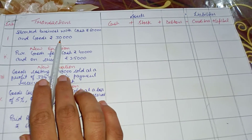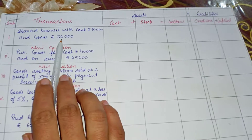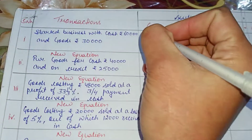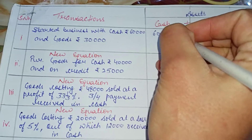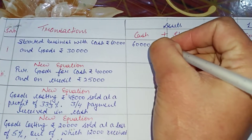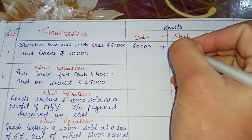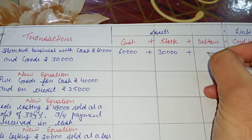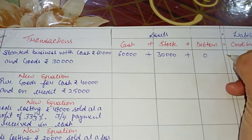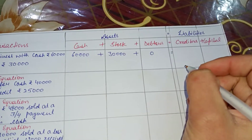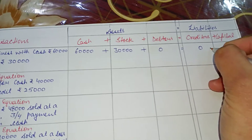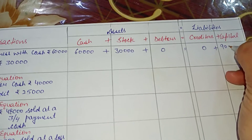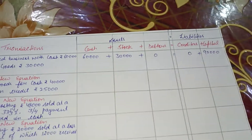Our first transaction is: started business with cash and goods. Cash is 60,000 rupees, plus stock 30,000 rupees, plus debtors 0, which is equal to creditors plus capital. Creditors is 0, and capital is 60,000 plus 30,000 — that is 90,000 rupees. So this is the first equation.